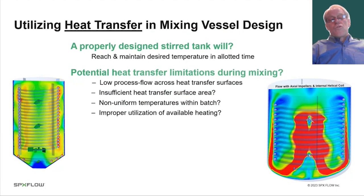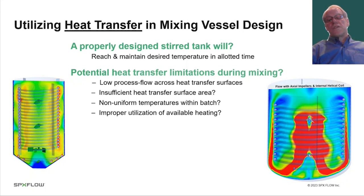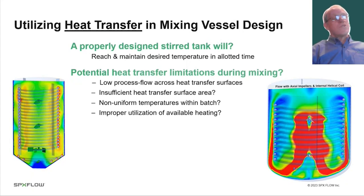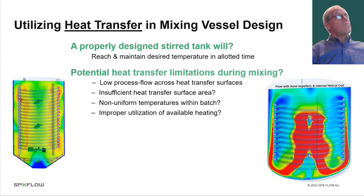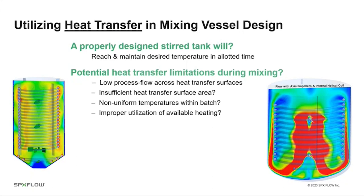A properly designed mixing vessel will successfully utilize heat transfer to reach a desired temperature within an allotted time. There are potential limitations — for example, low process flow across the heat transfer surface, inadequate surface area, non-uniform temperatures within the batch due to poor mixing, missing zones, or not fully utilizing the available heat transfer. Issues can also arise from the way heat transfer areas affect fluid flow.